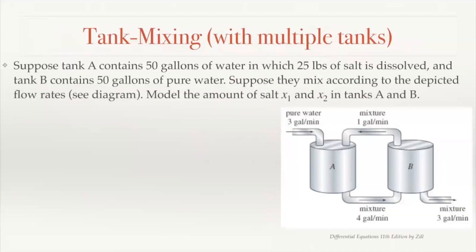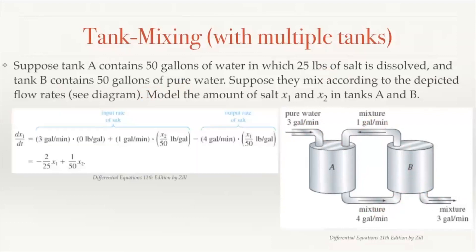These systems occur naturally in a number of situations. Back in chapter 3.3, we illustrated this with a double tank mixing problem. If tank A contains 50 gallons of pure water with 25 pounds of salt, and tank B has 50 gallons of pure water, and they intermix in this way, then we model the amount of salt in tanks A and B as a function of time. We do this just like our standard tank mixing problems, where for each tank we consider the input salt minus the output salt. For tank A, we'll call the amount of salt x1.